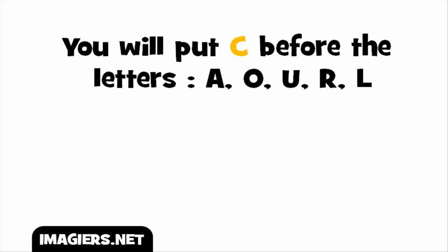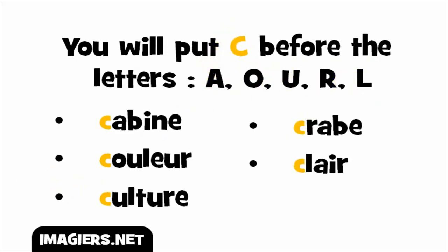So you get two options. The first one will be to put the letter C before the letters A, O, U, R, L. Remember you will have to put this C before these letters. We'll see a few examples now. The first one: C plus A — this combination will give you the sound /k/, so the full word goes like 'cabine'.